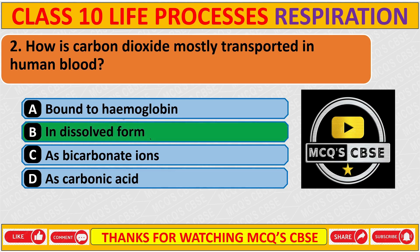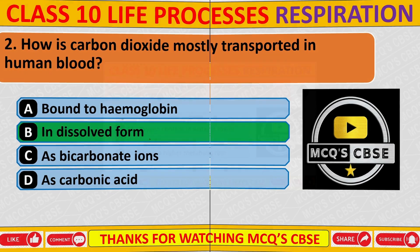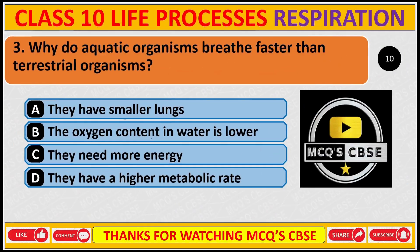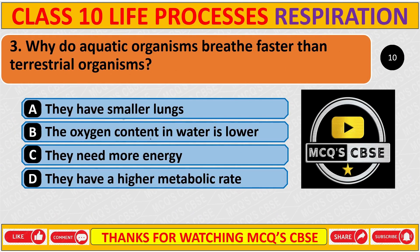Question 2: How is carbon dioxide mostly transported in human blood? Correct answer is B: In dissolved form. Question 3: Why do aquatic organisms breathe faster than terrestrial organisms? Correct answer is B: The oxygen content in water is lower.